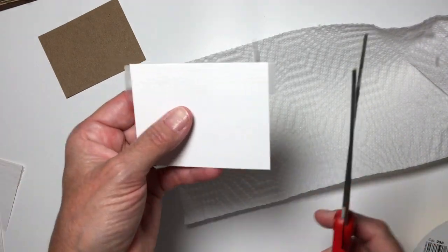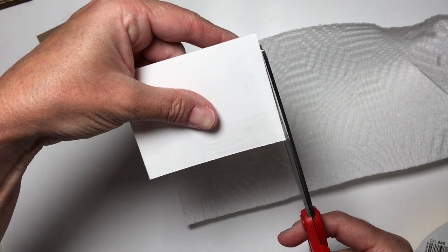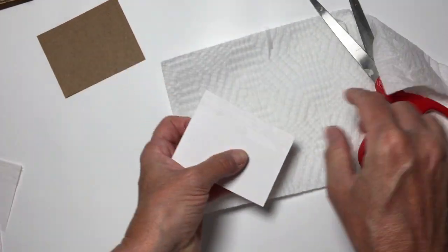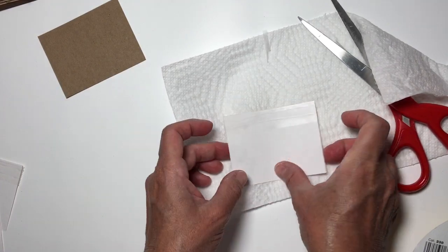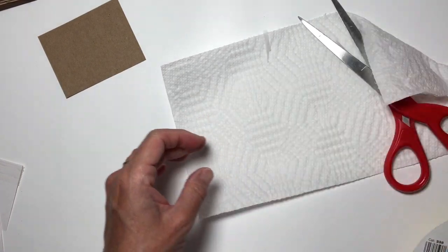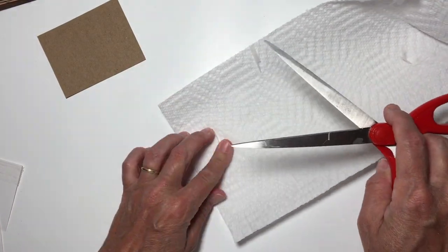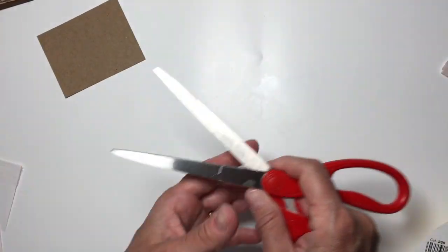We want to also make sure that we kind of squish this down a little bit so the tape sticks. Now we're going to set that aside to dry. Once those have dried, especially because I'm using three-in-one glue, it takes about five minutes to dry.